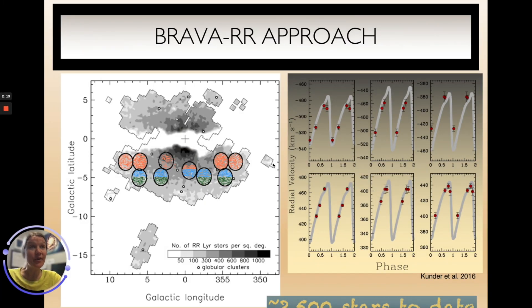RR Lyrae stars are also popular population 2 type stars because they are standard candles. Their luminosities can be estimated in a pretty straightforward manner. RR Lyrae stars, therefore, can give us a glimpse onto what the old, more metal-poor population in the bulge is like. This is a map of the known RR Lyrae stars identified from the OGLE photometric survey.